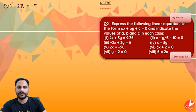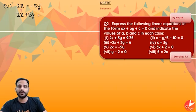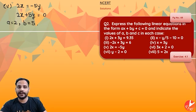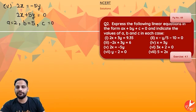The fifth equation is 2x = −5y. Shift −5y over: 2x + 5y = 0. So we get a = 2, b = 5, and since the constant term is not present, c = 0. In the general form, we have to make it equal to 0.